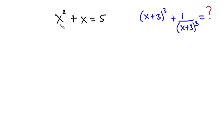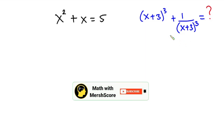Hello everyone. In this video we have this interesting problem: x squared plus x is equal to 5, and we have to find the value of (x+3)³ plus 1 over (x+3)³. As usual, before we start, pause the video and try first. If you're new here, consider subscribing and don't forget to like this video.